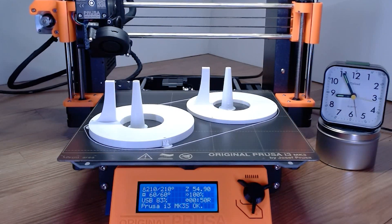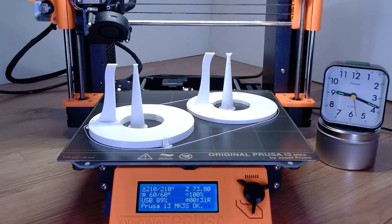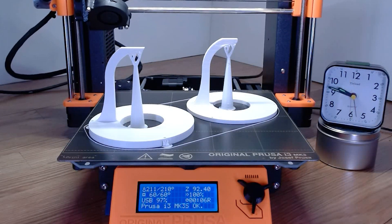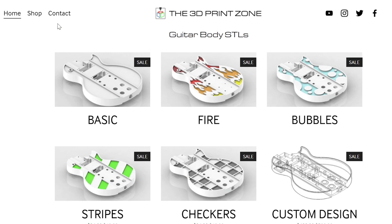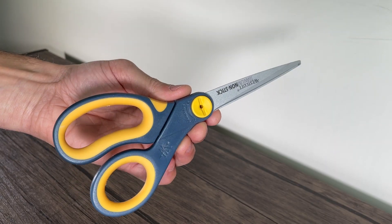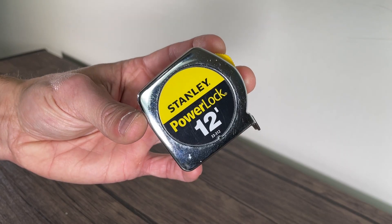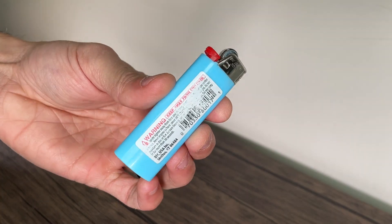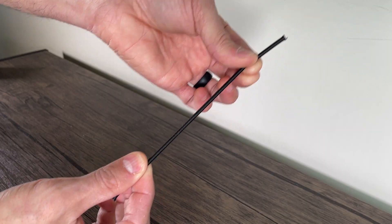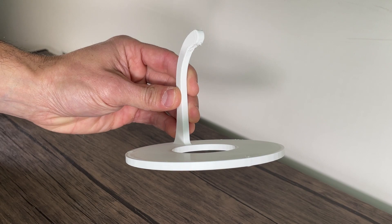The nice thing about this project is that it only requires a few basic items that you likely have laying around your house. I will leave a link to my website where you can purchase the STL files and a link to the bungee cord I used as well. You will need a pair of scissors, seven small zip ties, a tape measure or ruler, a lighter, an eighth of an inch bungee cord, and of course the 3D printed parts.